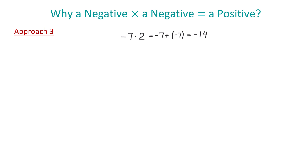Now, if we could lose this debt of 14 dollars, this would be the same as gaining 14 dollars. And to remove this debt, we would need to multiply negative 7 by negative 2. Then, this result will be positive 14, and this is a gain of 14 dollars. I hope you enjoyed this video. Please subscribe, leave a comment, and thank you for watching.